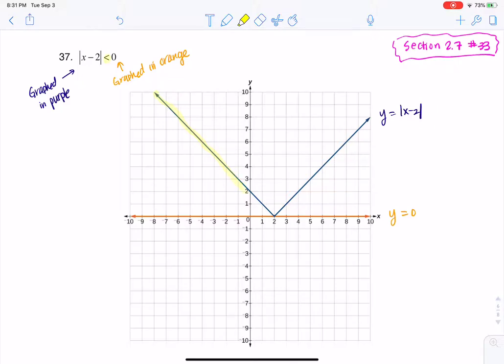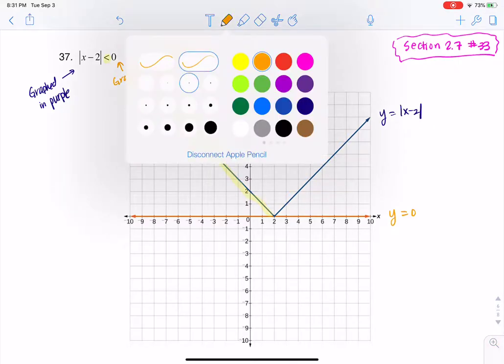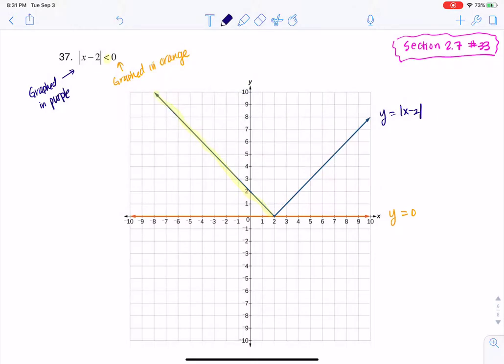Alright, so everywhere in here, I would have, and I can rewrite this for us. I would have actually said in here that the absolute value of X minus 2 is greater than 0. Because this graph is above the X axis.